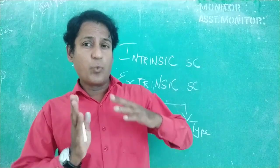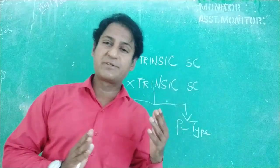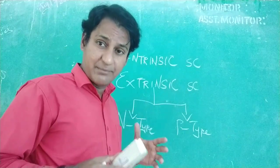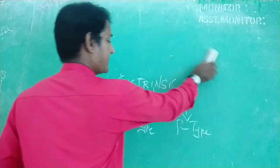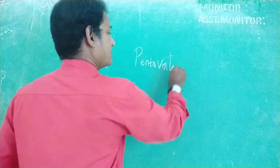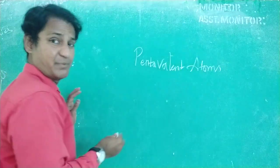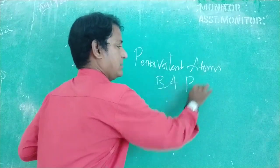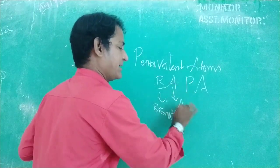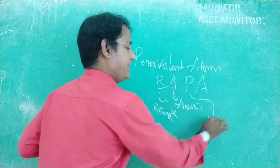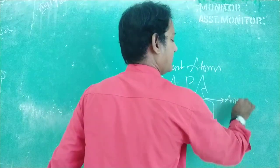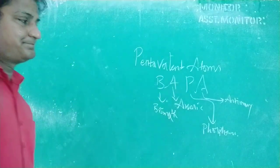What type of atoms can we dope into a pure semiconductor? There are two types of atoms. The first are pentavalent atoms, and the mnemonic for them is BAPA: B for bismuth, A for arsenic, P for phosphorous, and A for antimony.